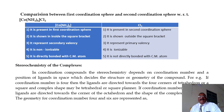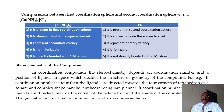The ions or ligands present in the first coordination sphere are non-ionizable, while the ions or ligands present in the second coordination sphere are ionizable. The first coordination sphere ligands are directly bonded to the central metal atom, while the second coordination sphere ligands are not directly attached to the central metal atom.